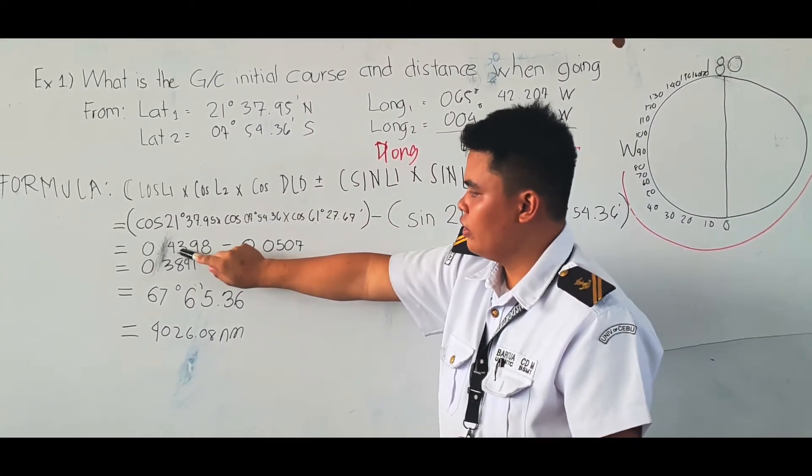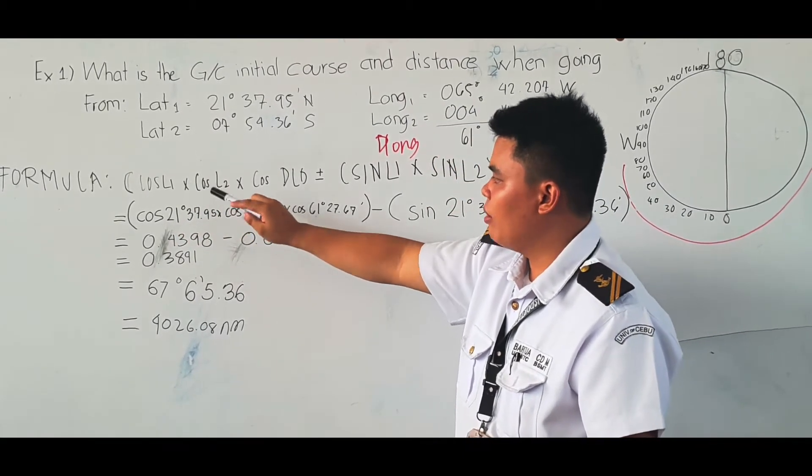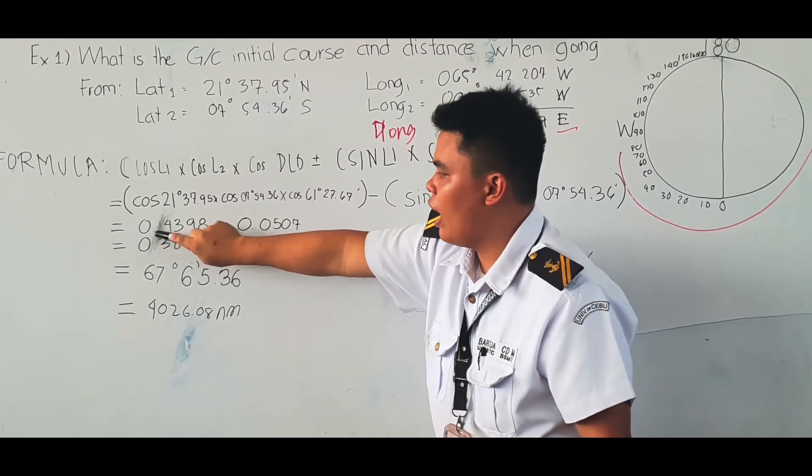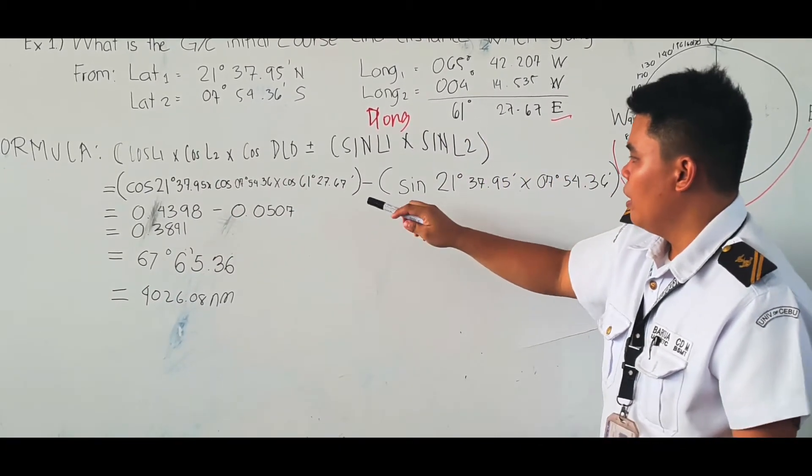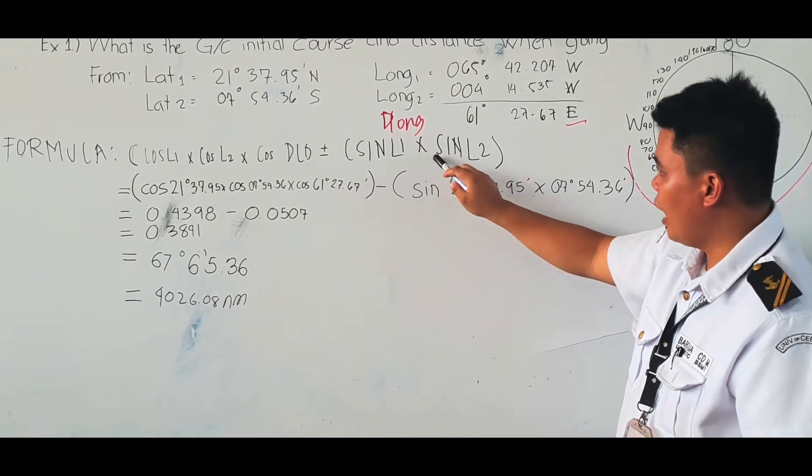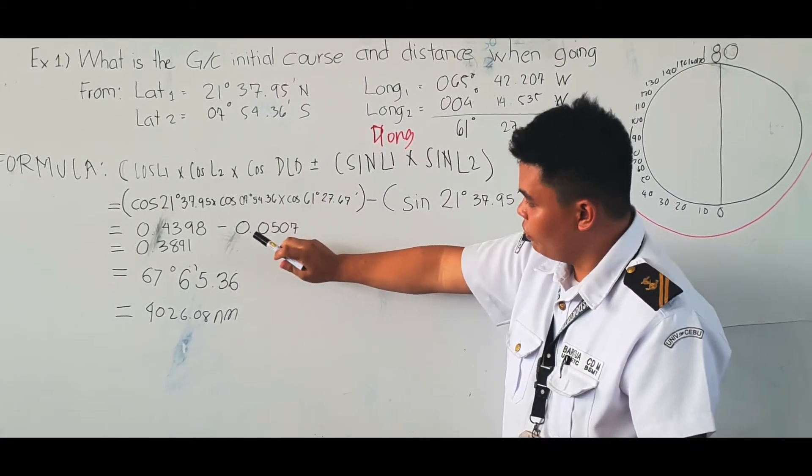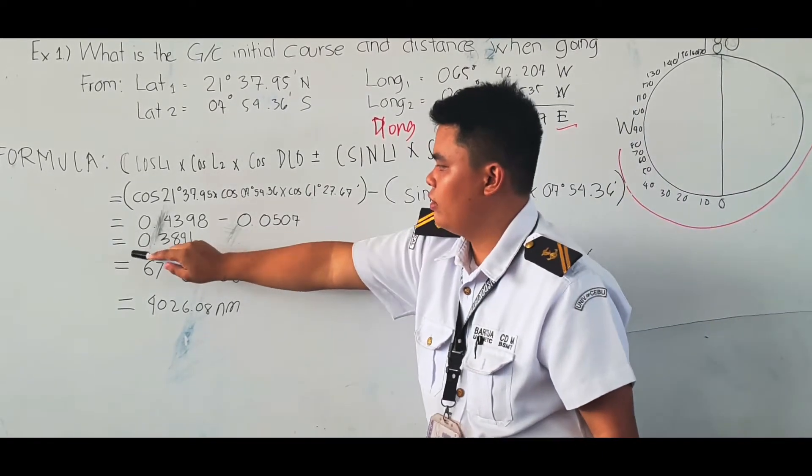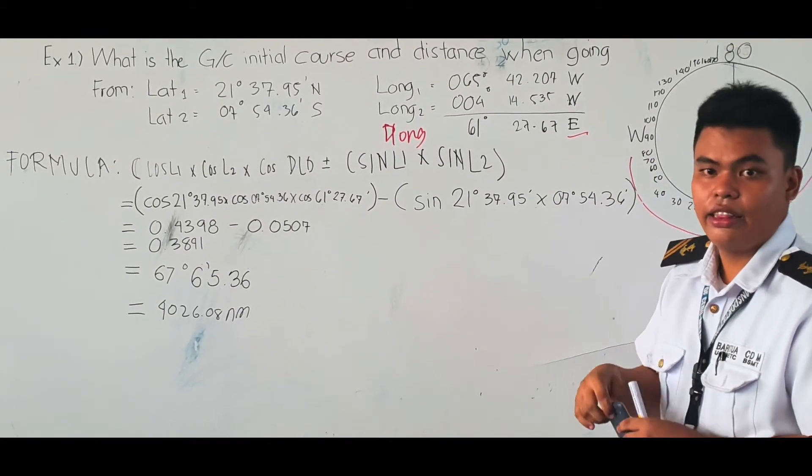To get this answer, we multiply cos L1 times cos L2 times D-long to get 0.4398. Then we also multiply cos L1 times cos L2 to get the product 0.0507. We subtract these to get the product 0.3891.